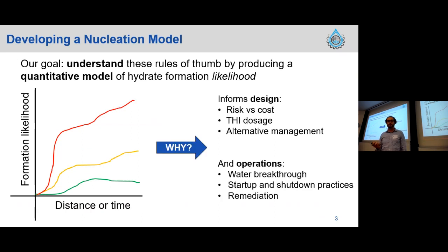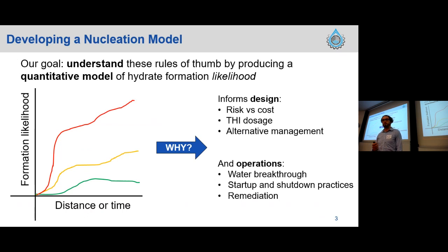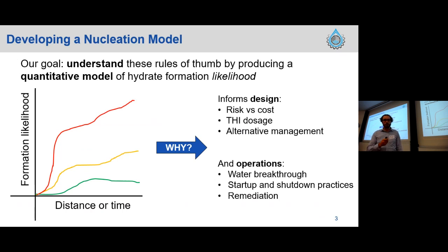The reason we want to do this is because it informs both design and operations. In terms of design, it lets us look at risk and cost-based optimization — for example, if there's a tiny probability of hydrate formation we might not actually need to dose any inhibitors. We can also optimize our KHI dosages and consider alternative management strategies. For operations, it can be affected by things like water breakthrough — if more water suddenly comes in and we don't have more KHI dosage capacity, will we have a hydrate problem? It also informs startup and shutdown practices and remediation by predicting where hydrate plugs will form.